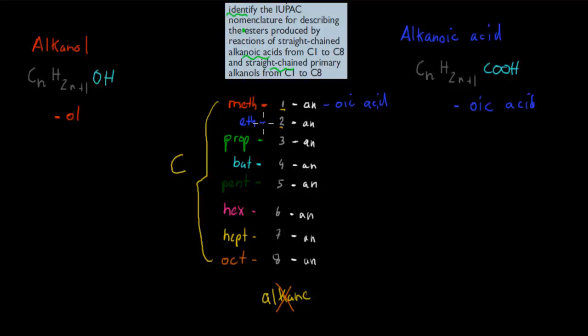If there's two carbons, it's eth for two, an for it being straight-chained, and oic acid. For three, prop for three, an for straight-chained, and oic acid for it being an alkanoic acid. And so on.